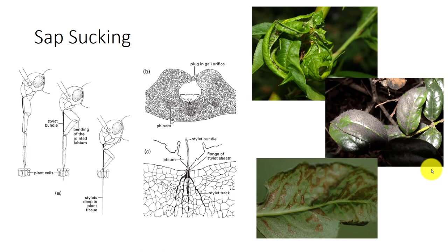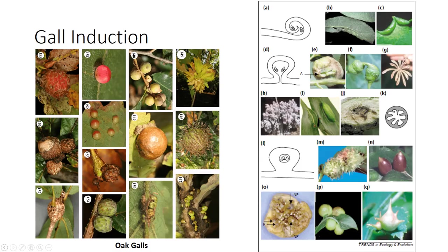Thrips feed by penetrating the tissues using their stylets, then rupture individual cells below, discoloring the leaf, bud, flower, or shoot. Insect-induced plant galls result in a very specialized type of insect-plant interaction in which the morphology of the plant parts is altered. Galls are defined as pathologically developed cells, tissues, or organs of plants that have arisen by hypertrophy or hyperplasia — cells increasing in size or number, respectively — as a result of stimulation from foreign organisms. Galls are induced by viruses, bacteria, fungi, nematodes, and mites, but insects cause many more. Gall-forming insects include mainly the orders Hemiptera, Diptera, and Hymenoptera.